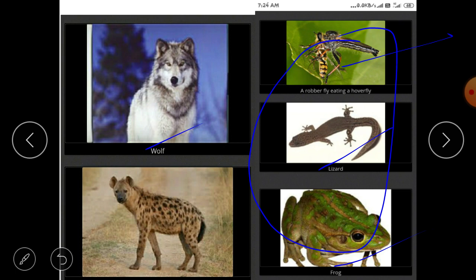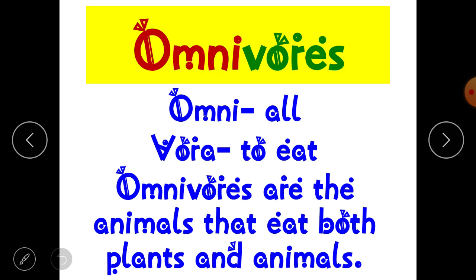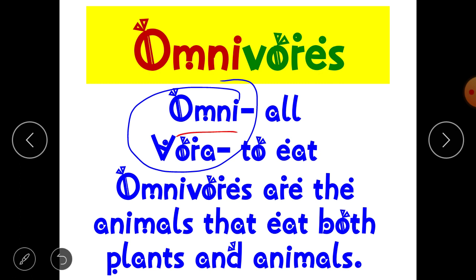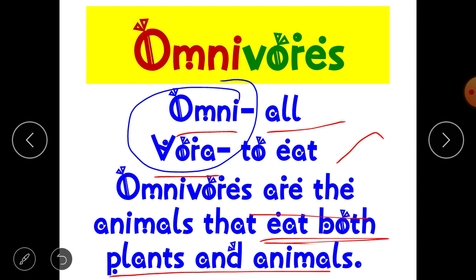Some animals eat both plants and animals — we placed them in column three. These animals are known as omnivores. The word 'omnivore' is made up of two Latin words: 'omni,' meaning all, and 'vora,' meaning to eat. So omnivores are animals that eat both plants and animals.